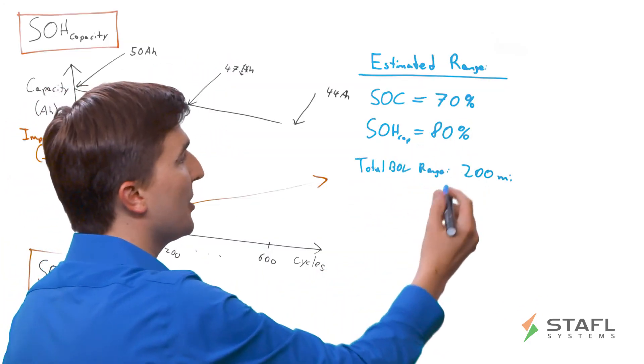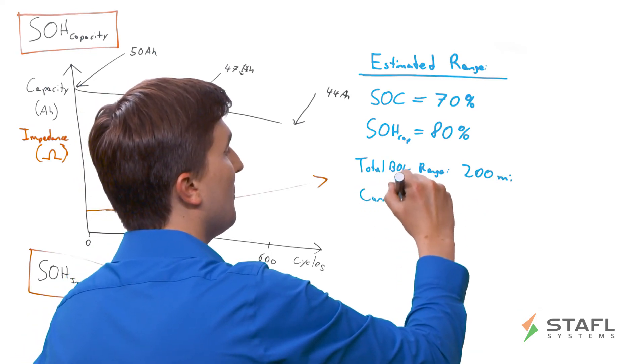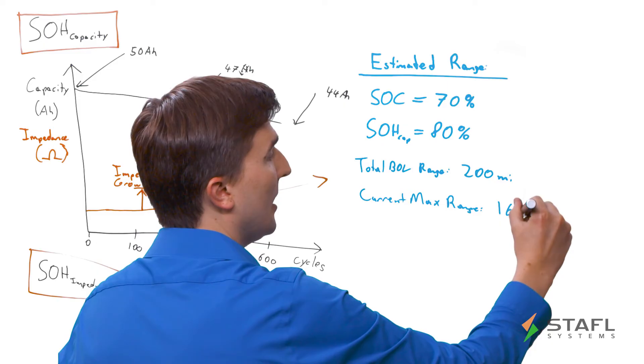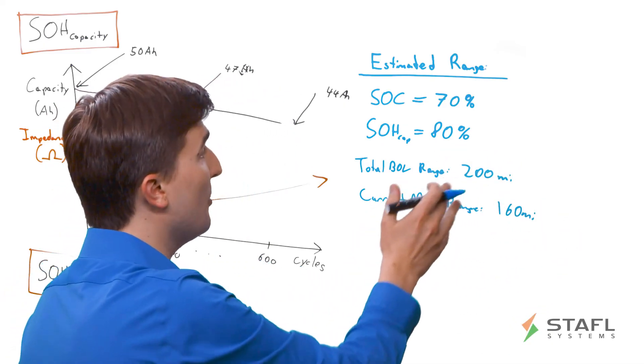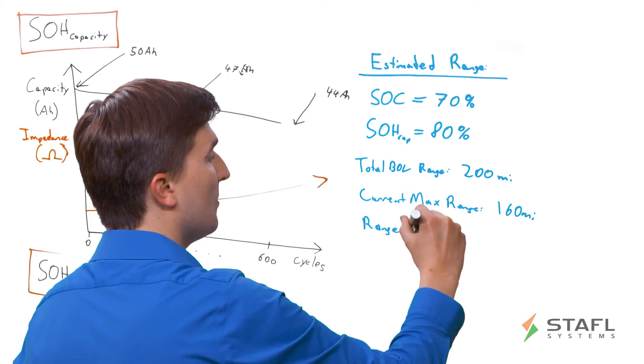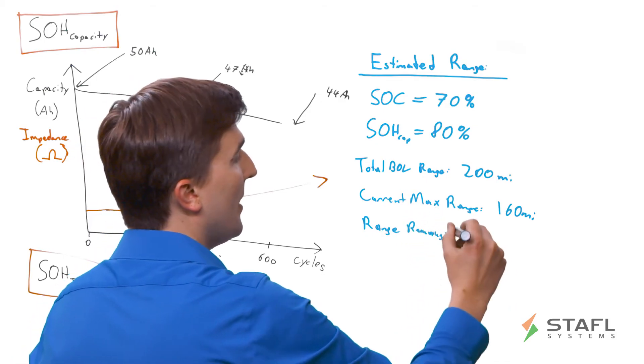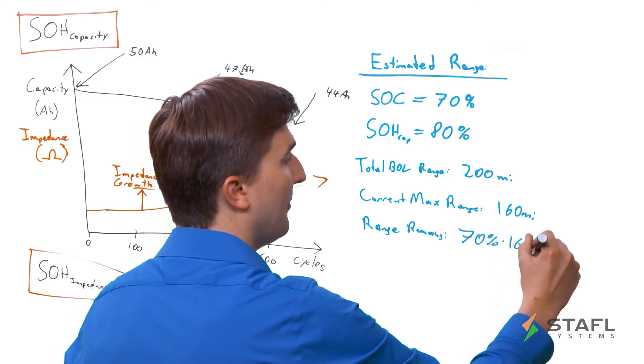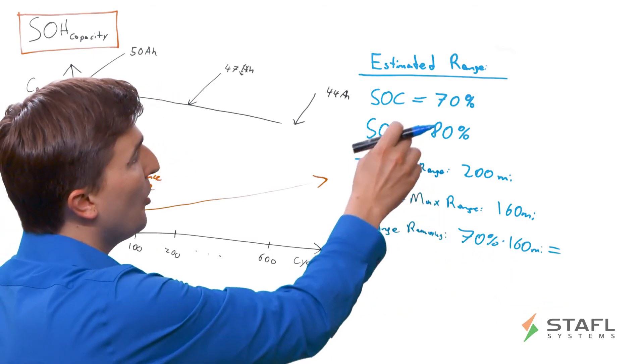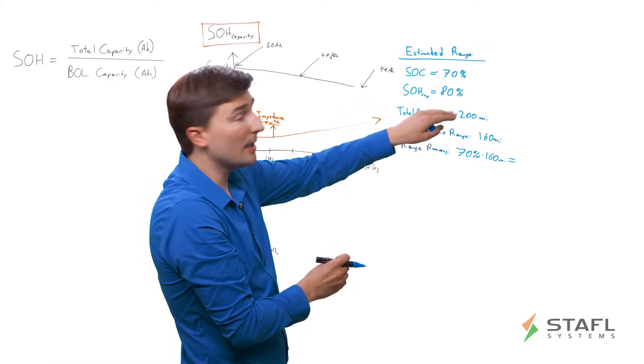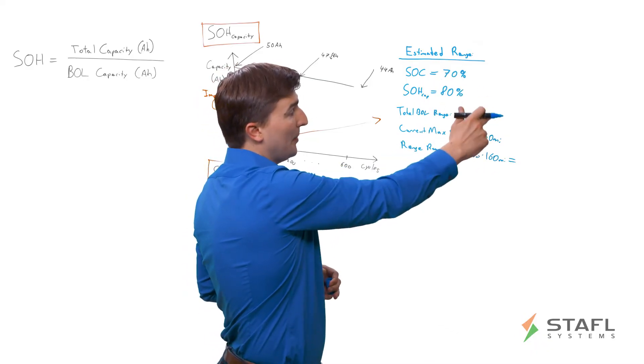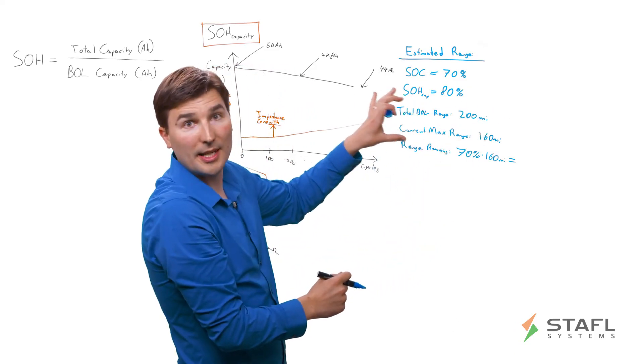Well, if the SOH capacity is now 80%, then you have your current max range of the vehicle is now 160 miles. So not an insignificant difference. It's 40 miles reduction. So very important to know that. And then if you wanted to know range remaining, then you would need to take 70% multiplied by 160. And that gives you your range remaining. So it's very important to understand that if you didn't model your state of health capacity correctly, and you assumed that just your state of charge was going to give you an accurate range estimation, you would be off by potentially up to 40 miles of range delta. So it's very important to understand this feature.